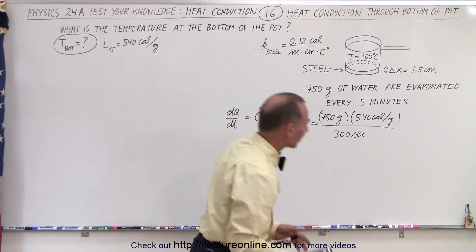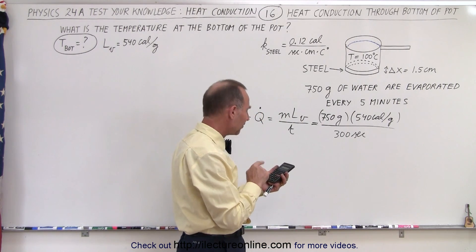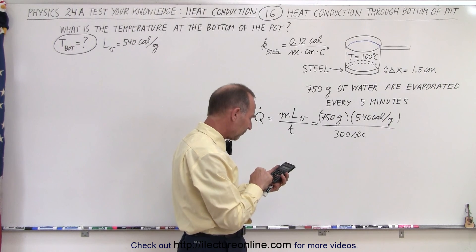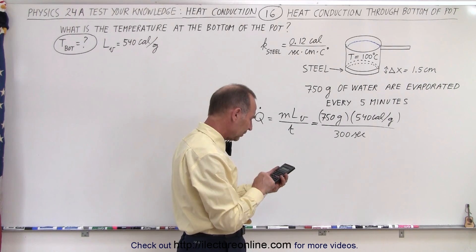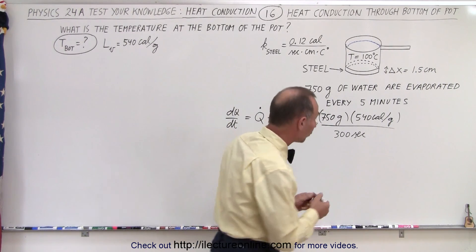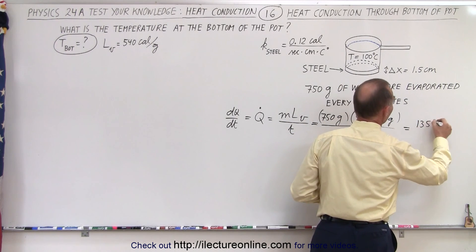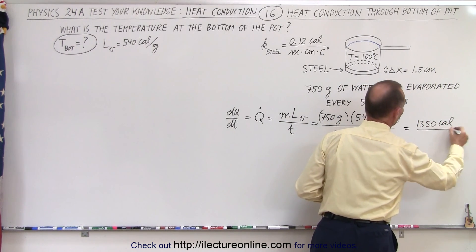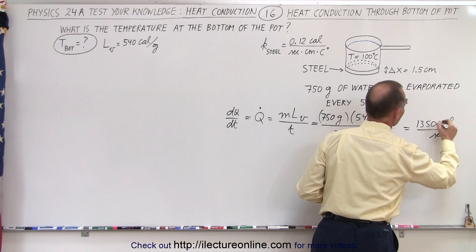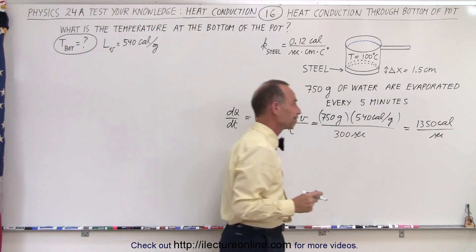So in the calculator, we can figure out what that is. So it's 750 times 540 divided by 300, and that requires 1,350 calories per second. Now that we know the heat flow,